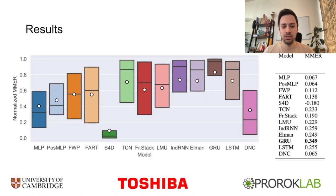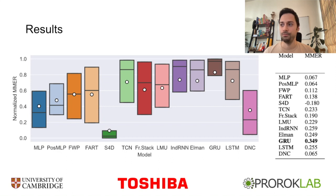Here are our results. On the left, we plot the MMER normalized by the best and worst performing models on each environment, where higher is better. And on the right, we provide the raw MMER for each model. Going through the models from left to right, we have MLP, an MLP with positional encoding, two linear transformers, a state-space model, convolutional networks, frame stacking from the Atari paper, five recurrent neural networks, and a memory-augmented neural network.